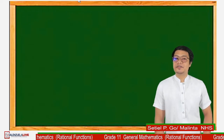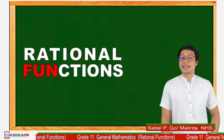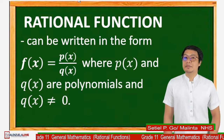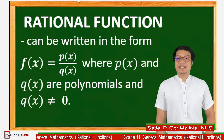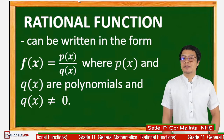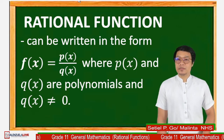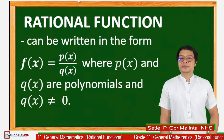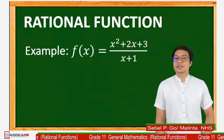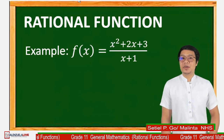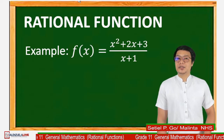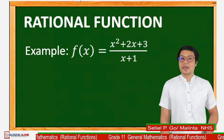In order for us to understand further about the rational function, let us have its definition. Rational functions can be written in the form of f(x) = p(x) over q(x), wherein p(x) and q(x) are polynomials, and q(x) is not equal to 0. Here is an example: f(x) = x squared plus 2x plus 3 over x plus 1. As you notice, the numerator is a polynomial, and even the denominator.